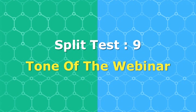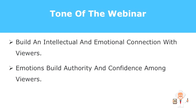Webinars work similar to conversations. The last thing you want is just a robot voice droning out all of your information without any kind of feedback or conversation. So it's a wise move to build an intellectual and emotional connection with your audience. One excellent and proven way is using emotion. A sparing usage of emotion works because your viewers can relate more with the lessons you share. Emotions also help build authority and confidence among your viewers. However, using too much emotion can interrupt the lesson and make you look unprofessional.